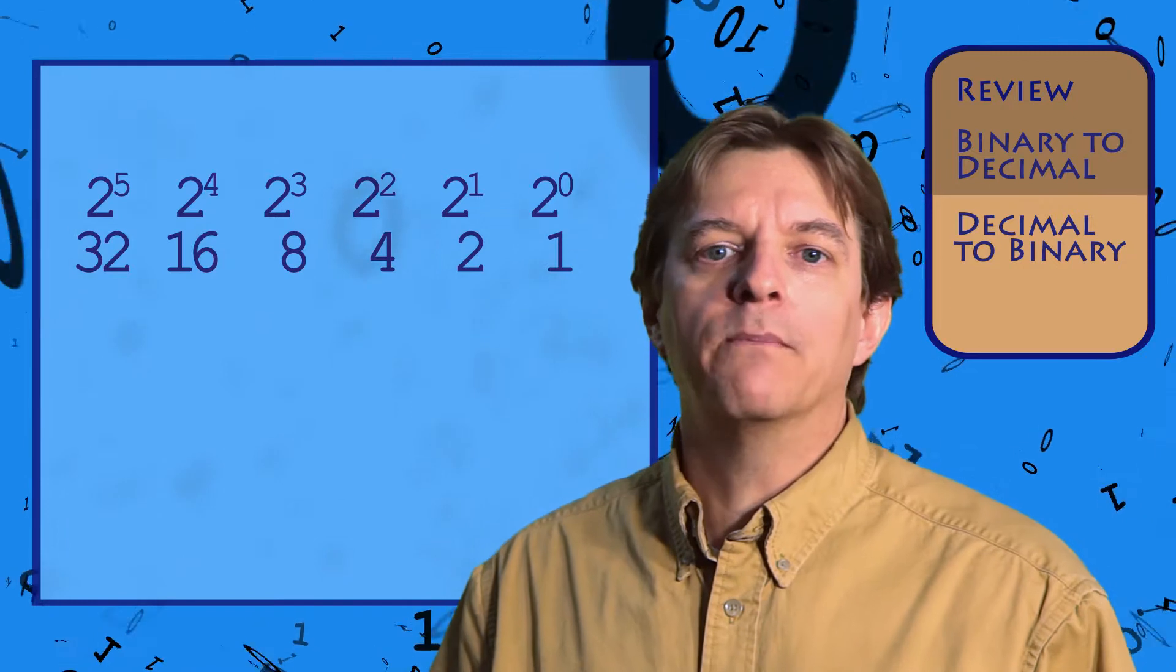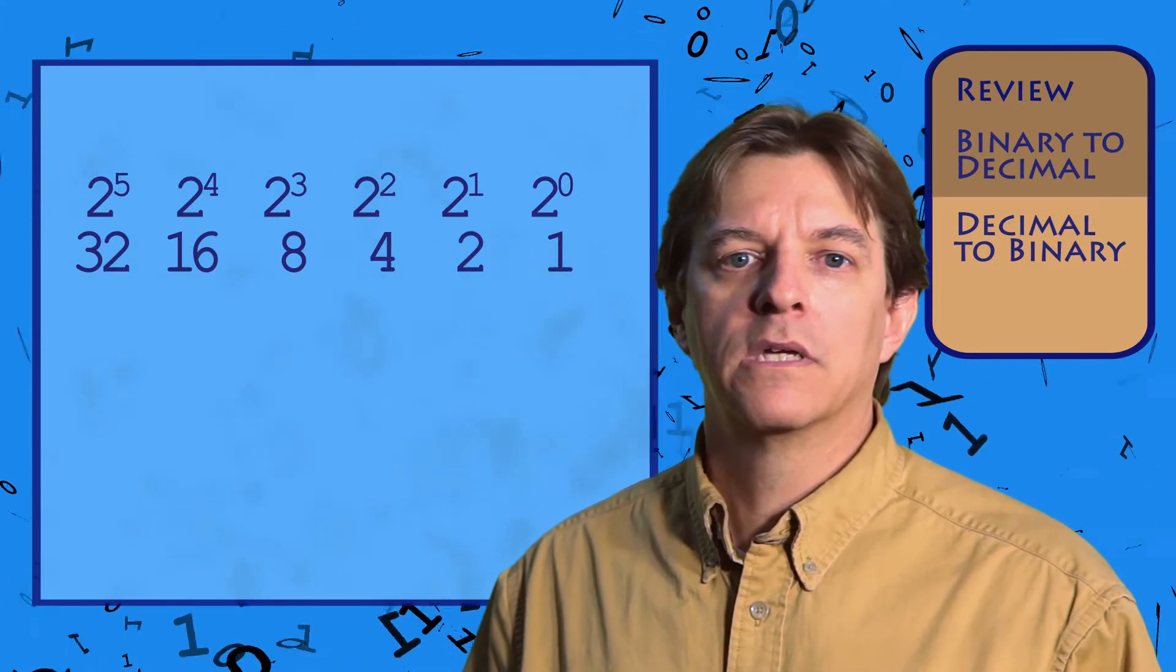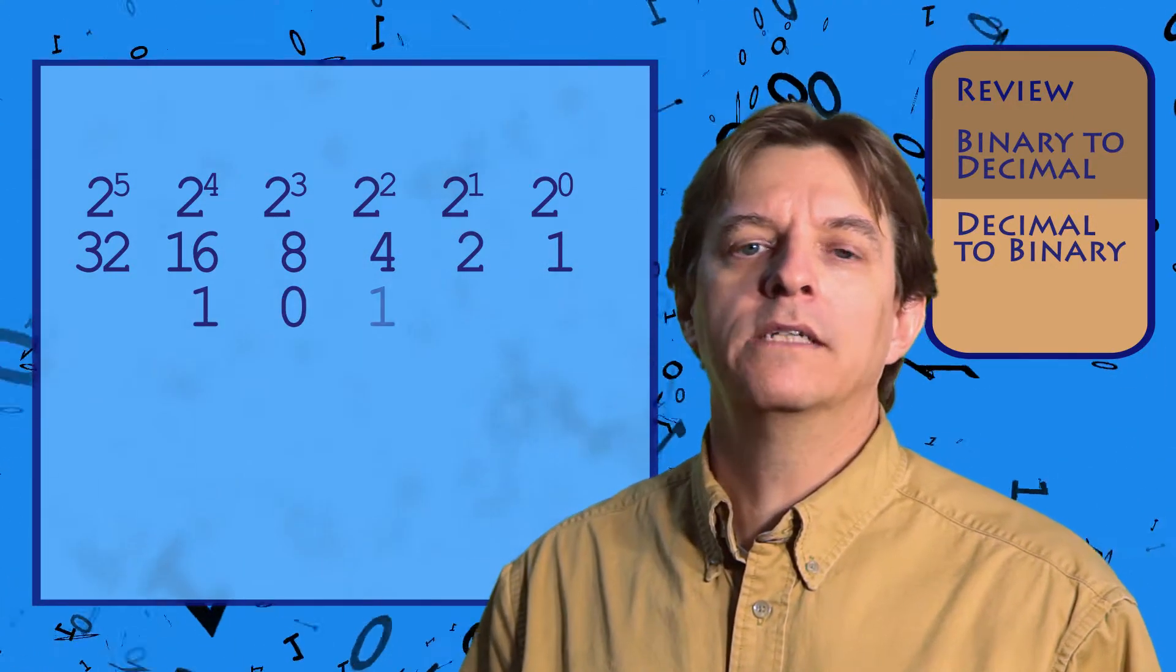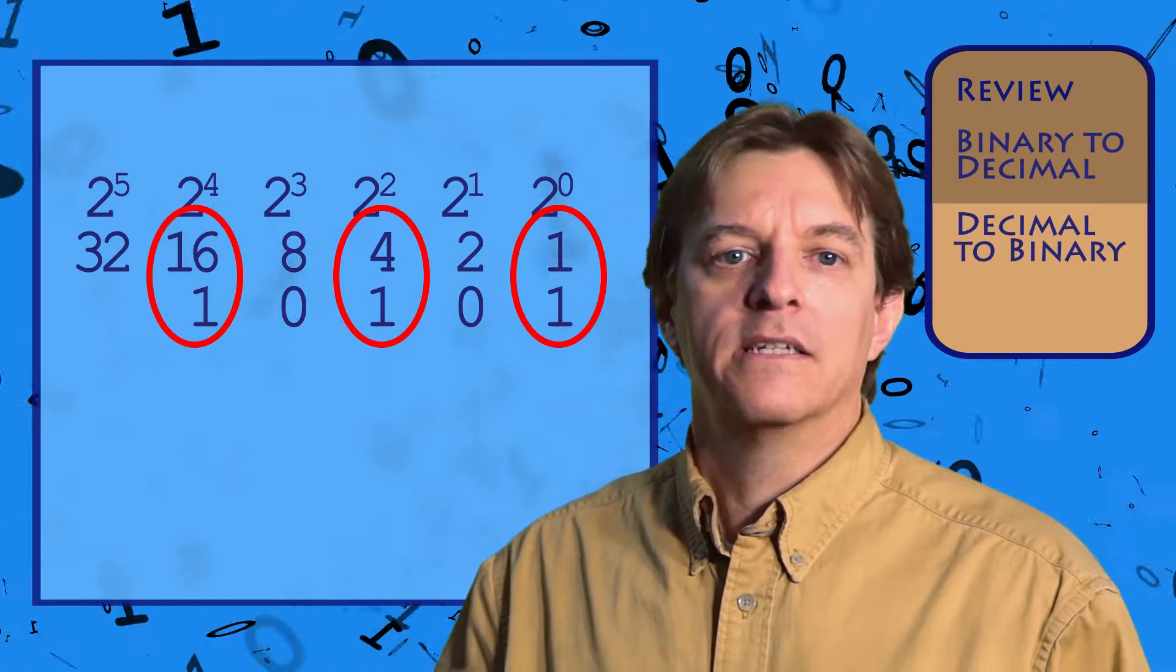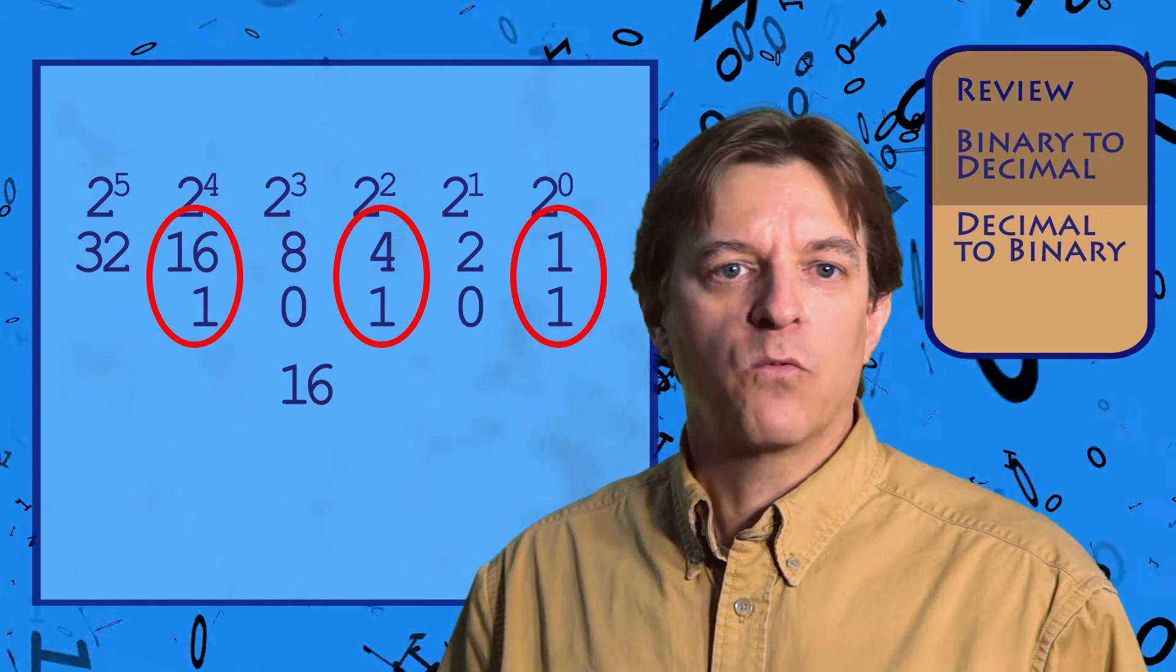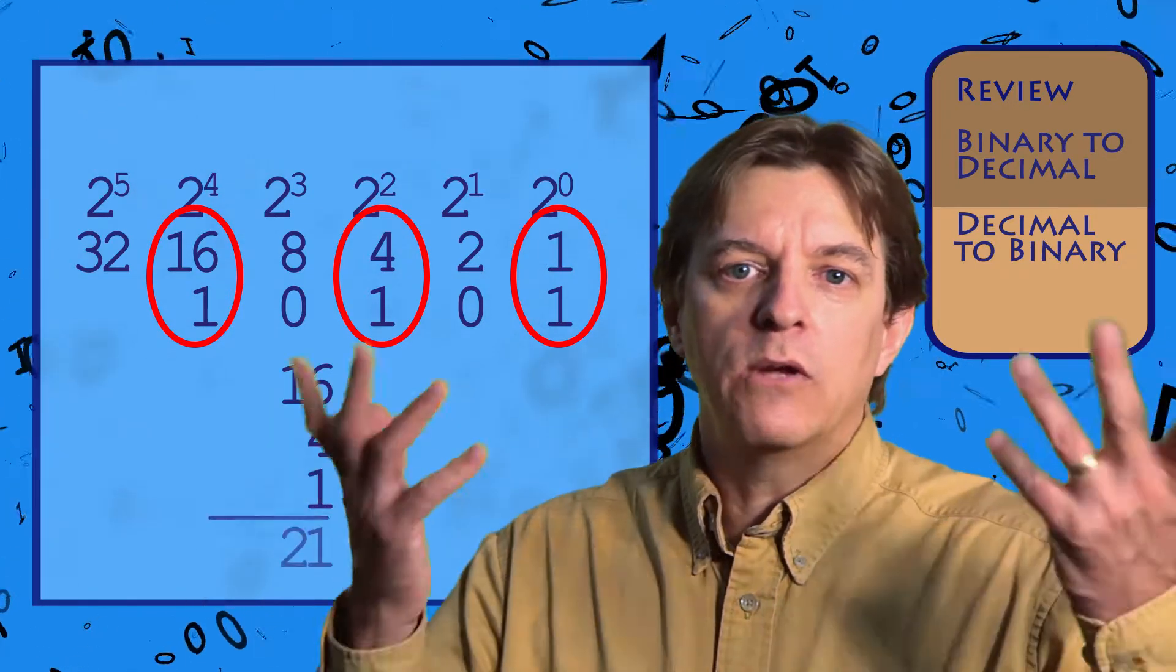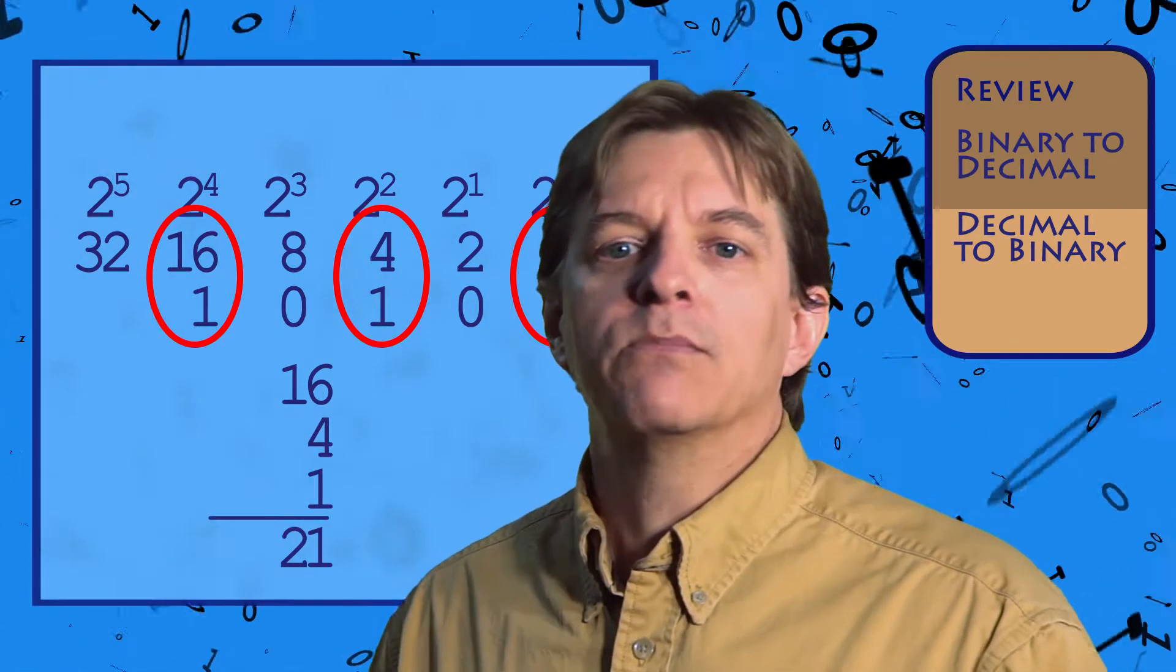Next, all we need to do is write the binary number below the numbers: 1, 0, 1, 0, 1. And then simply add the values of the columns with 1's in them. 16 plus 4 plus 1 equals 21 decimal. Binary to decimal is really pretty simple.